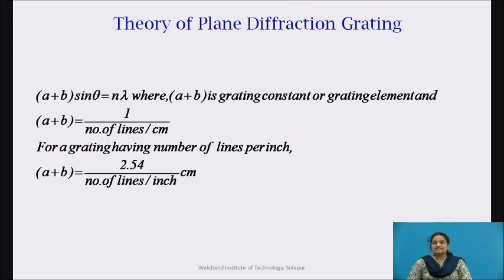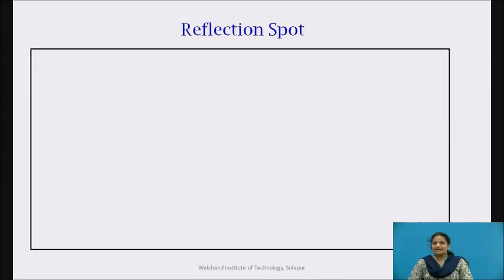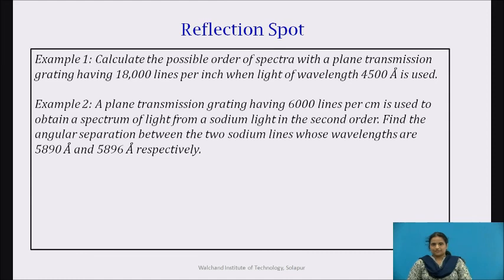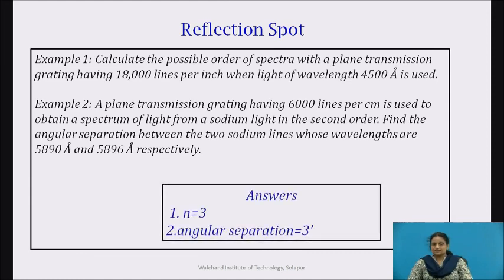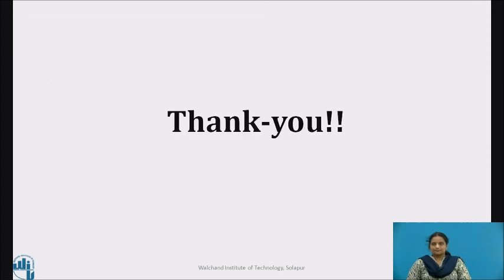When the number of lines is given per centimetre, then (a + b) can be calculated by 1 divided by number of lines per centimetre. When the number of lines is given per inch, the formula is (a + b) = 2.54 divided by number of lines. Now pause the video and try to solve this numerical. Check for the correct answers. These are the references. Thank you.